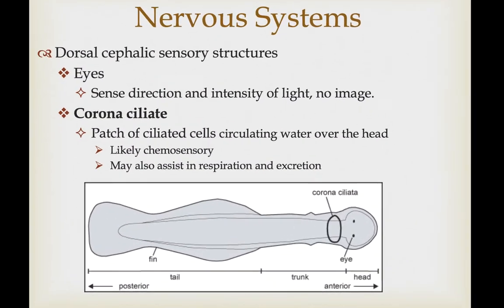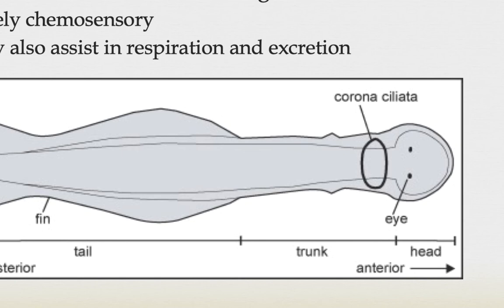Their cephalic sensory structures include eyes that can sense direction and intensity of light but don't really form an image. They have a ring-like structure around their head called the coronal ciliate — a patch of ciliated cells that circulates water over the head, likely helping them assess the chemosensory situation, but which may also assist in gas exchange and getting rid of nitrogenous waste.